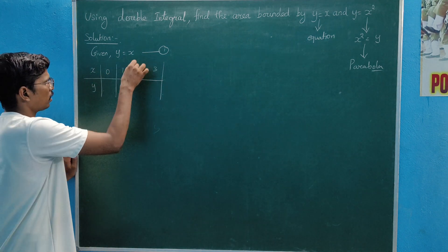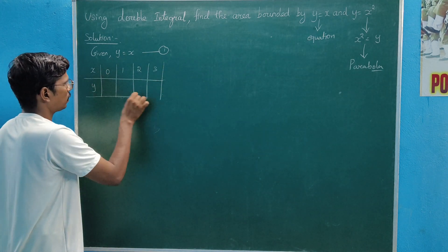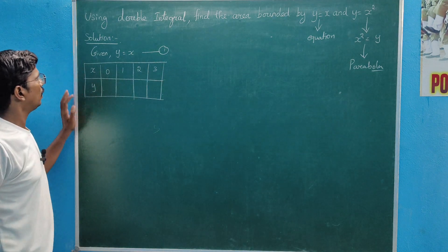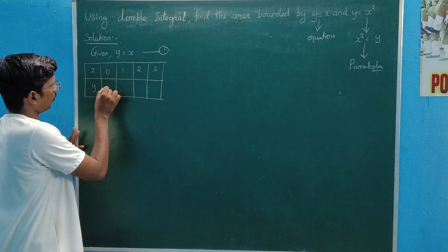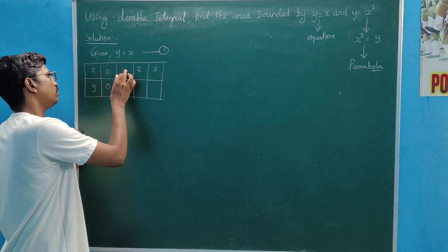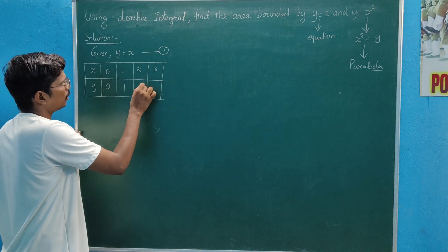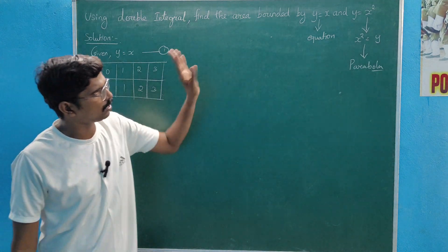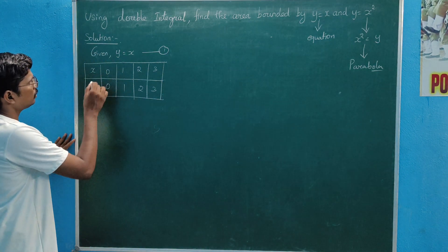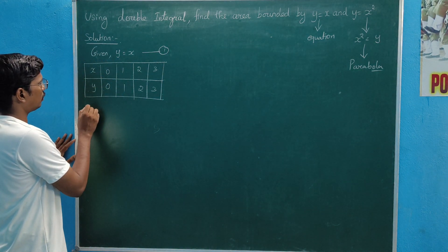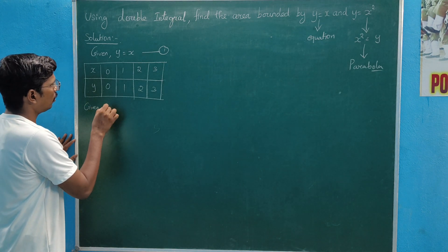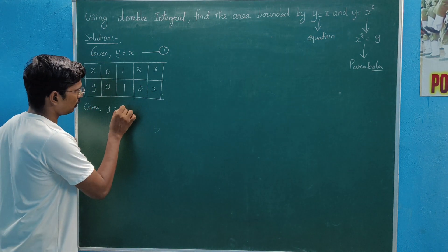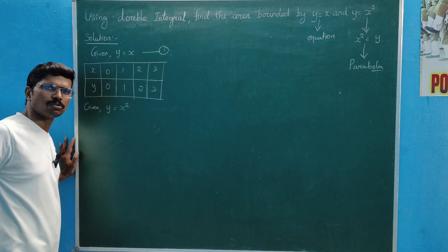When x equal to 0, y equal to 0. When x equal to 1, y equal to 1. Here values 2 and 3 apply. Then the second term given is y equal to x squared.